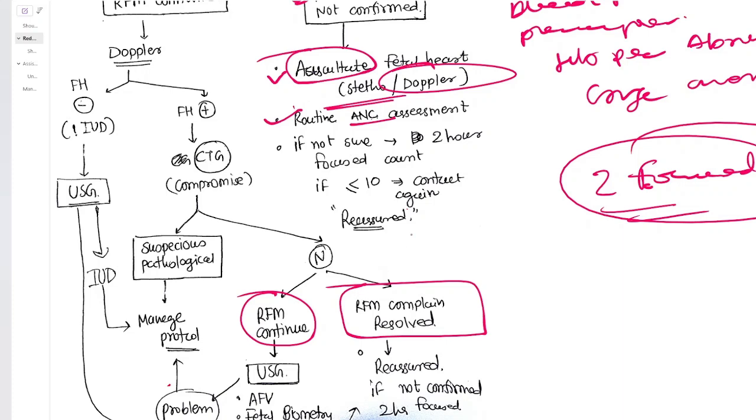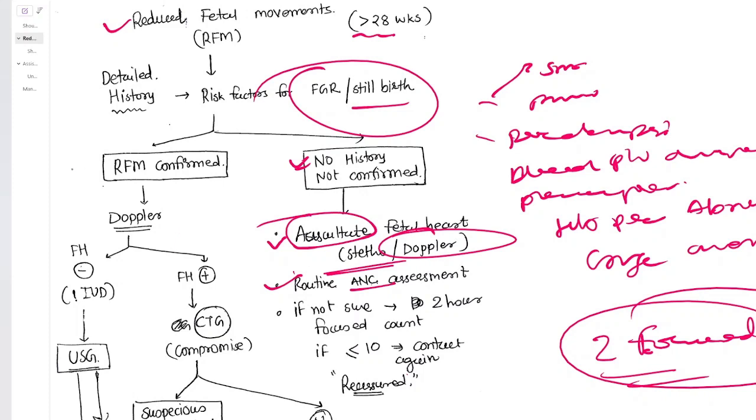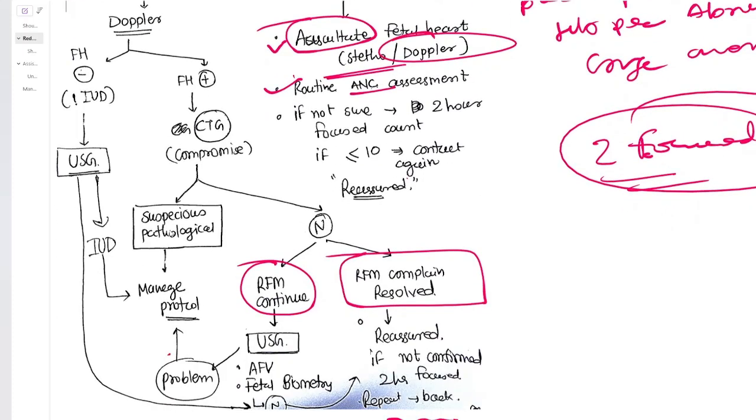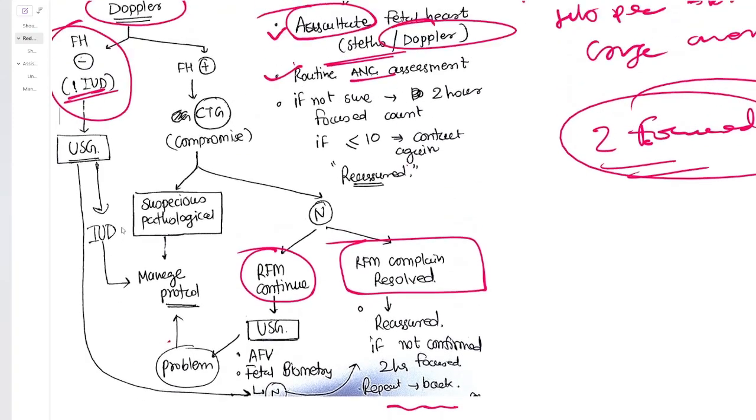Now if the patient's history confirms that the patient is really having reduced fetal movements, then you do the Doppler. What is the purpose of doing Doppler here? To identify the fetal heart, whether it is present or absent. Unfortunately, in some cases it is absent. That particularly means it can be most likely intrauterine death, which is not good news, very bad news.